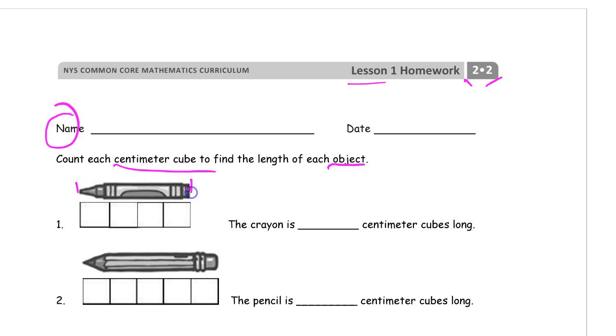Here's an object, this is a crayon, and we're going to count one, two, three, four cubes. It's four cubes long.